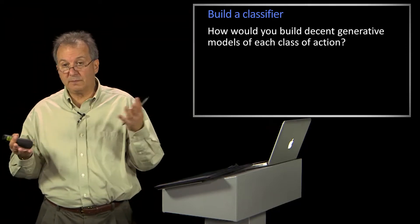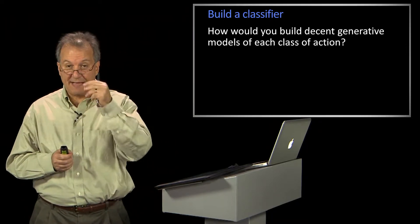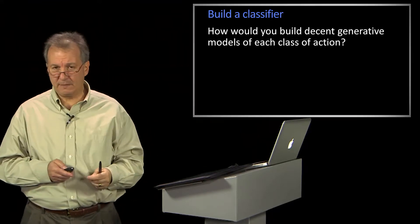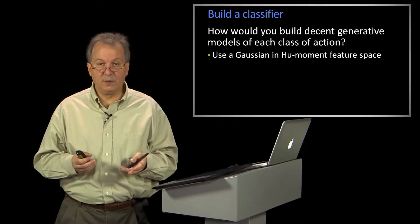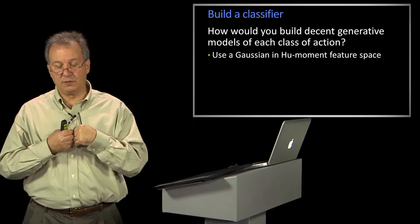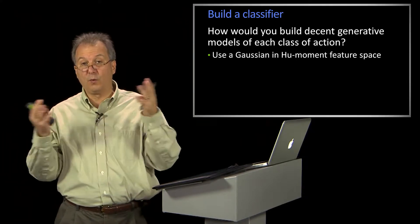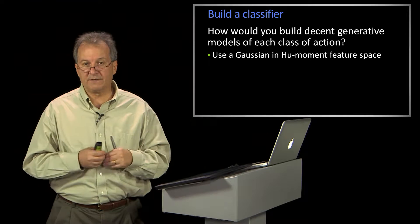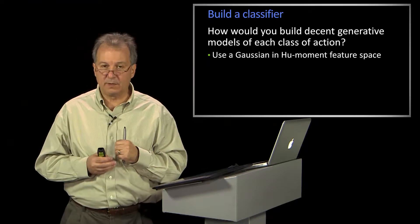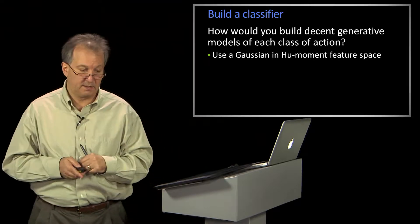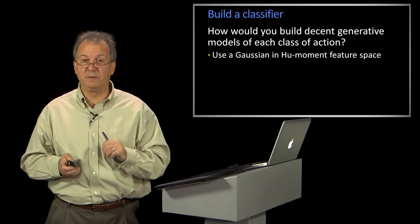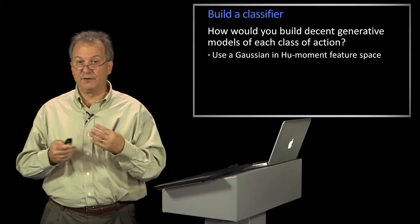How might you build a reasonable generative model of each class of action? One reason we might want generative models is we might not have a whole lot of examples. A simple thing you might do is use a Hu moment feature space — seven things applied to two images gives 14 numbers. You could use a Gaussian, or maybe a Gaussian with diagonal covariance so you don't have to worry about having too many points, or a mixture of Gaussians. The idea is you build a Gaussian model for each of those classes.